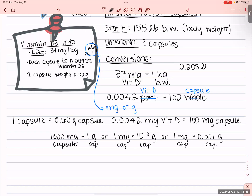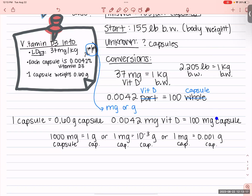So our additional conversion is 2.205 pounds of body weight equals one kilogram of body weight. Now we have all the conversions needed, because we can connect the start to the unknown without lifting our finger: pounds of body weight → kilograms of body weight → milligrams of vitamin D → milligrams of capsule → grams of capsule → capsules. You cannot cancel kilograms of body weight with kilograms of capsule, for example — make sure your descriptors match the things you're connecting.